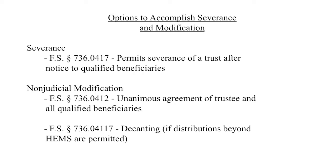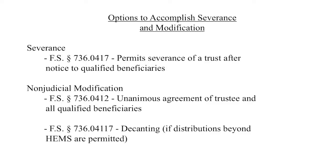Under state law, we look at the options to accomplish the severance and modification. Luckily in Florida, we have a specific statute: Florida Statute 736.0417 says you can sever a trust into multiple trusts as long as it does not impair the rights of any beneficiary. Here, the severance into two trusts does not impair any beneficiary — Will gets out of the business and Carlton gets the business. Florida Trust Code Chapter 736 also provides multiple modification options.